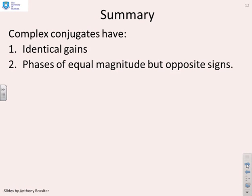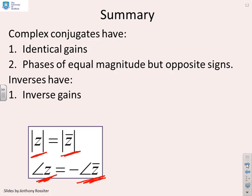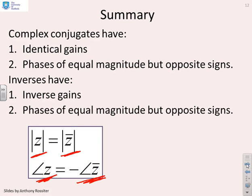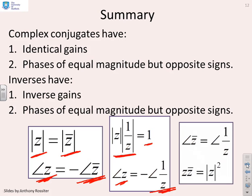Summary: complex conjugates have identical gains — the modulus of z equals the modulus of z-bar — and phases of equal magnitude but opposite signs, so the phase of z equals minus the phase of z-bar. For inverses, they have inverse gains — the modulus of z times the modulus of 1/z equals 1 — and phases of equal magnitude but opposite signs: phase of z equals minus phase of 1/z. Notably, the phase of the complex conjugate equals the phase of the inverse.